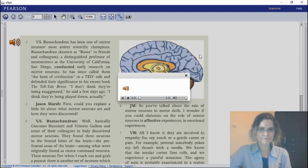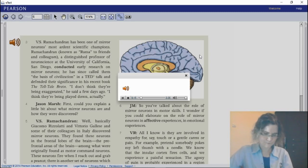V.S. Ramachandran has been one of mirror neurons' most ardent scientific champions. Ramachandran, known as Rama to friends and colleagues, a distinguished professor of neuroscience at the University of California San Diego, conducted early research on mirror neurons. He has since called them the basis of civilization in a TED talk and defended their significance in his recent book, The Telltale Brain. 'I don't think they're being exaggerated,' he said a few days ago. 'I think they're being played down, actually.'